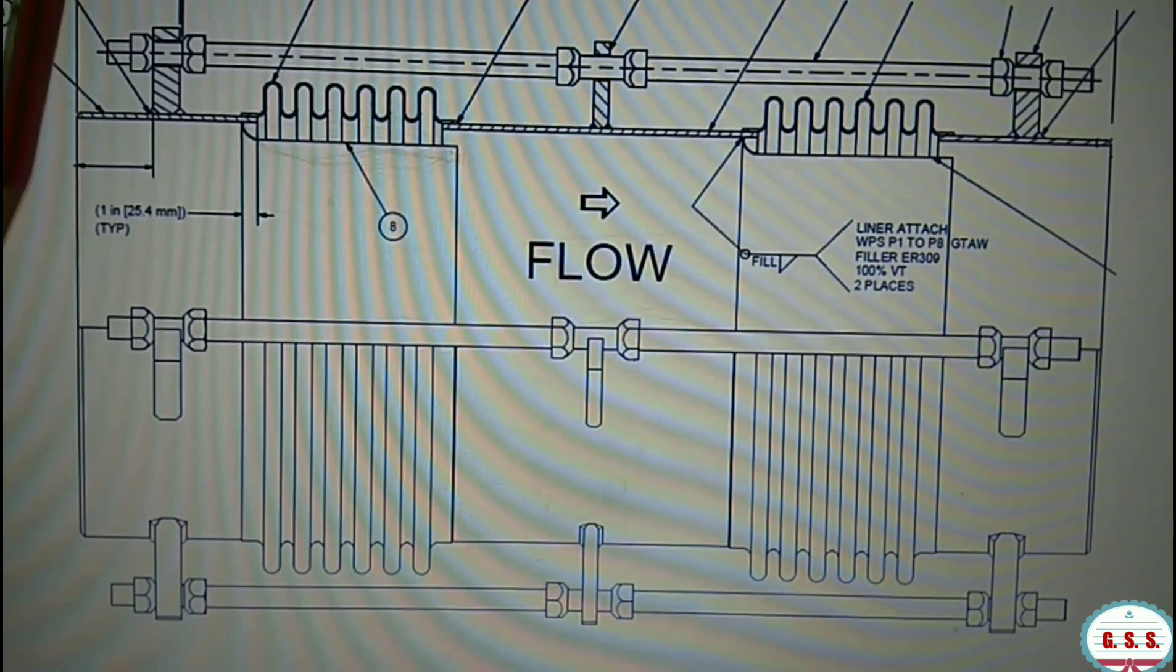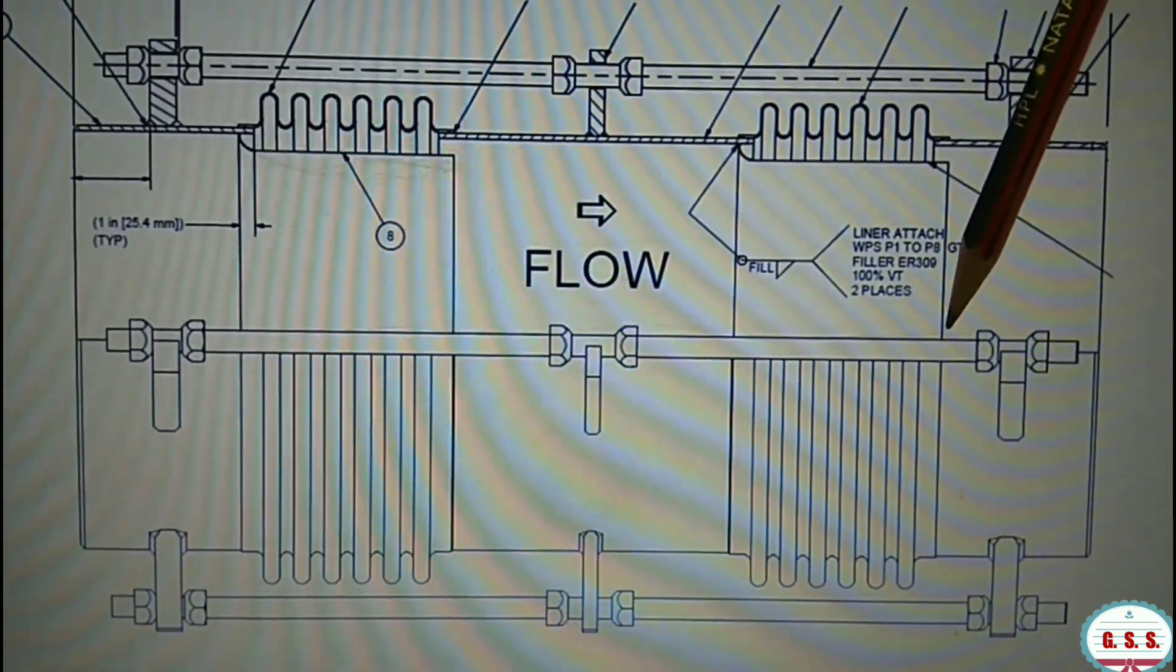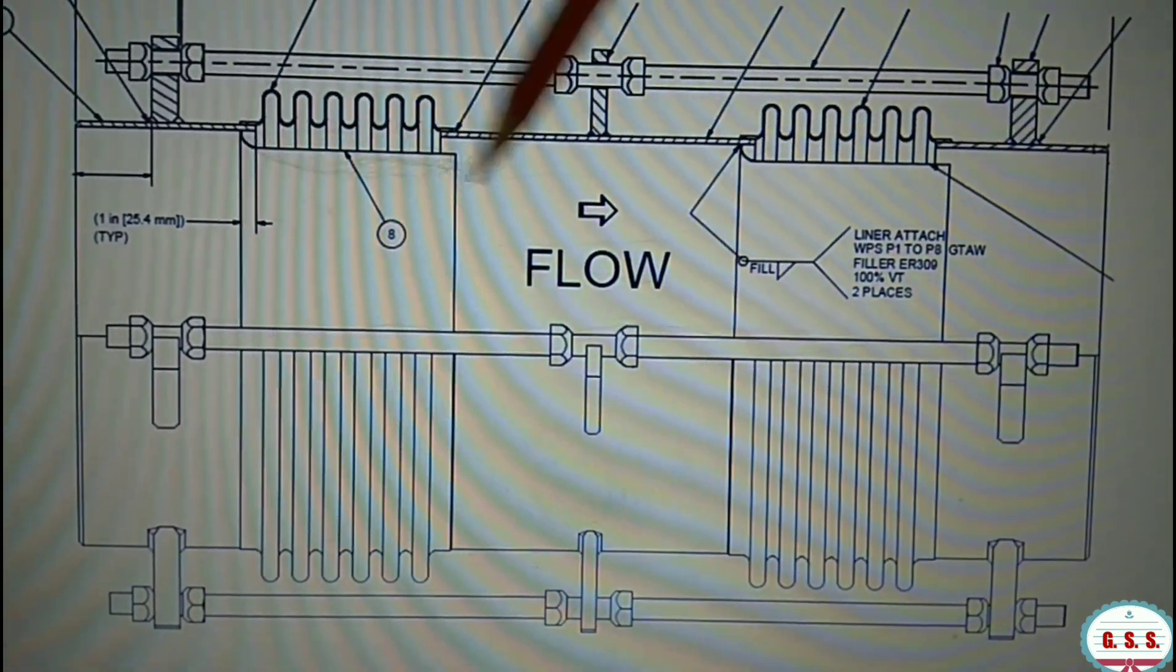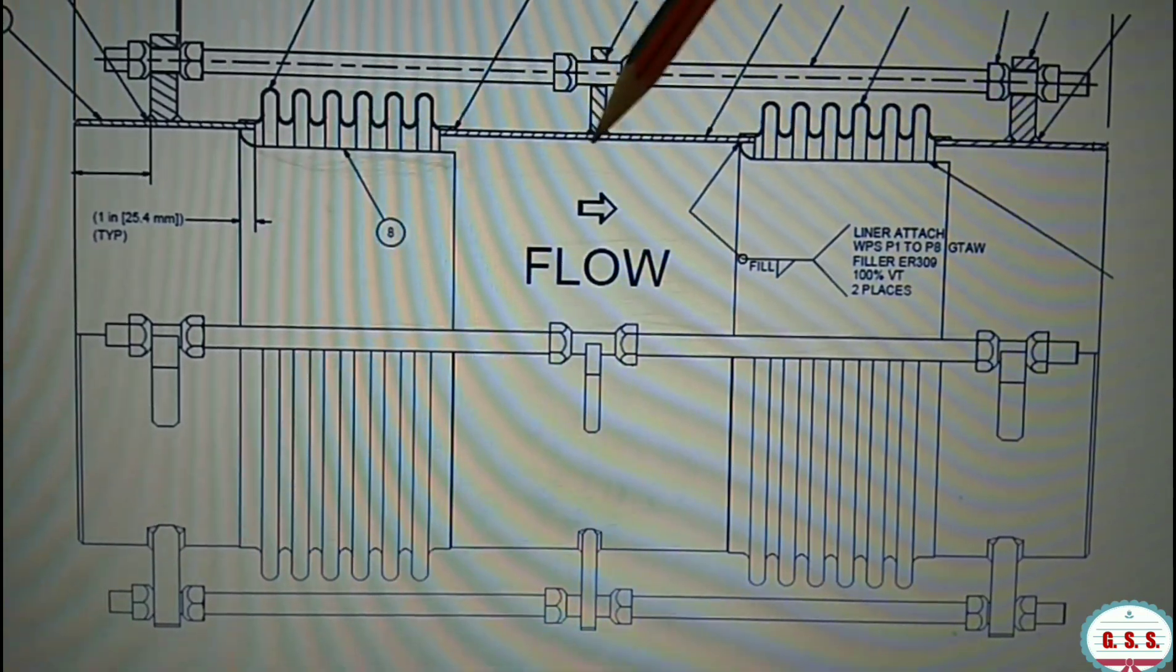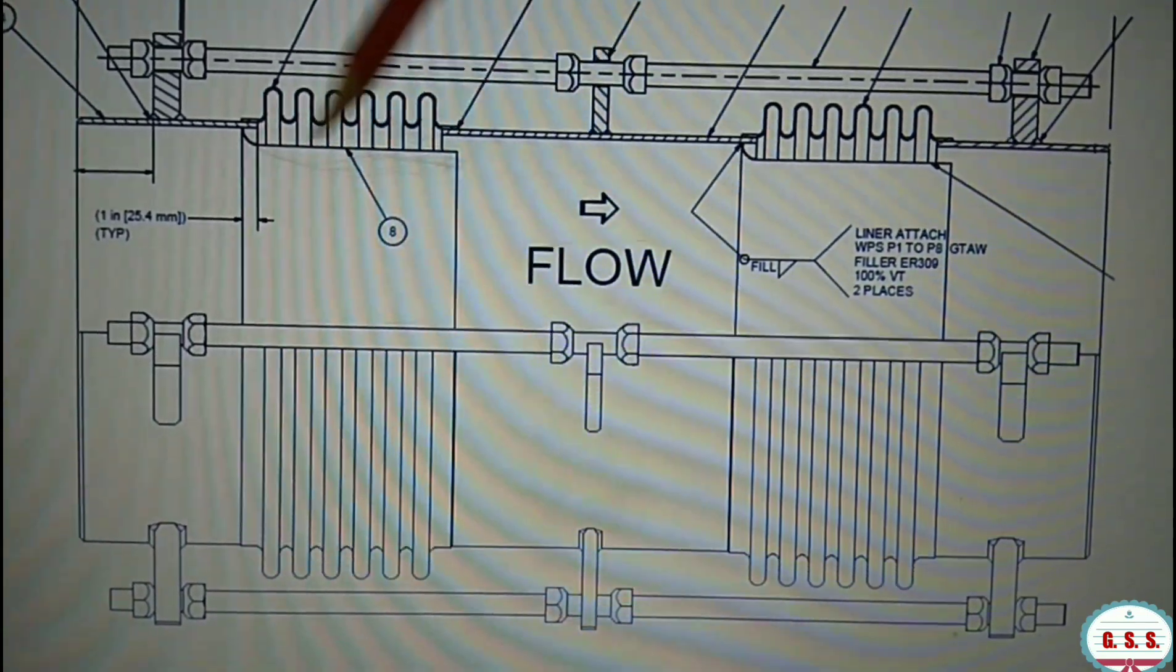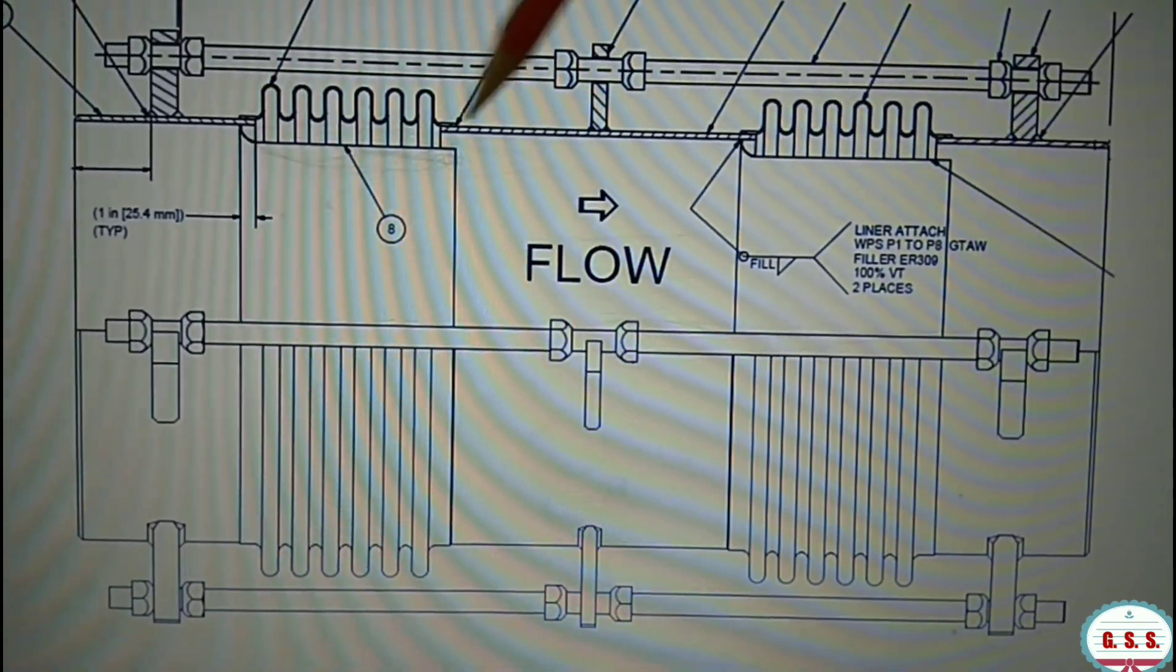In that case, flow will be like this but due to fluctuating flow, there will be back flow and that back flow will hit the inner sleeve. Due to that repeated hitting, this inner sleeve may fail and the bellows may fail.